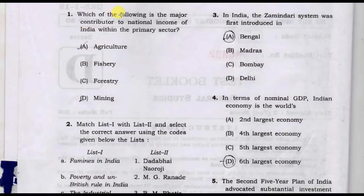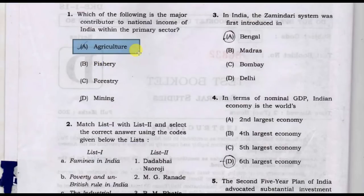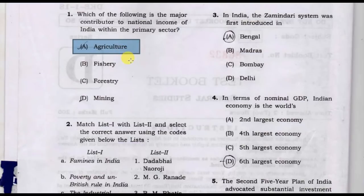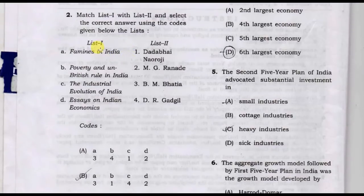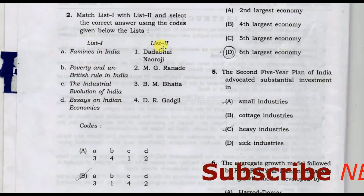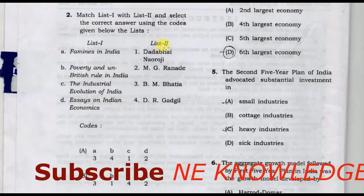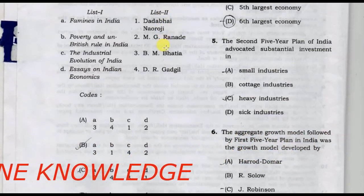Which of the following is the major contributor to national income of India within the primary sector? The correct answer is option B.